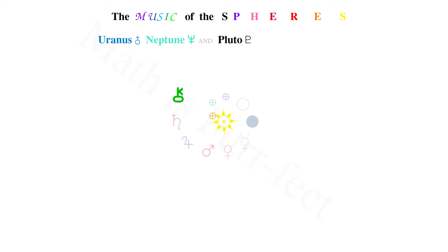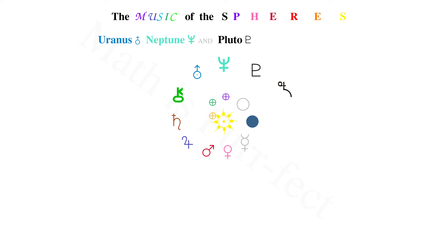Om-Chiron Major 2nd, Om-Uranus 5th, Om-Neptune Perfect 5th, Om-Pluto Microtone, Om-Chiron Sedna Magical Tone, Om-Chiron Major 2nd. As stated by Toth: that which is above is as that which is below.